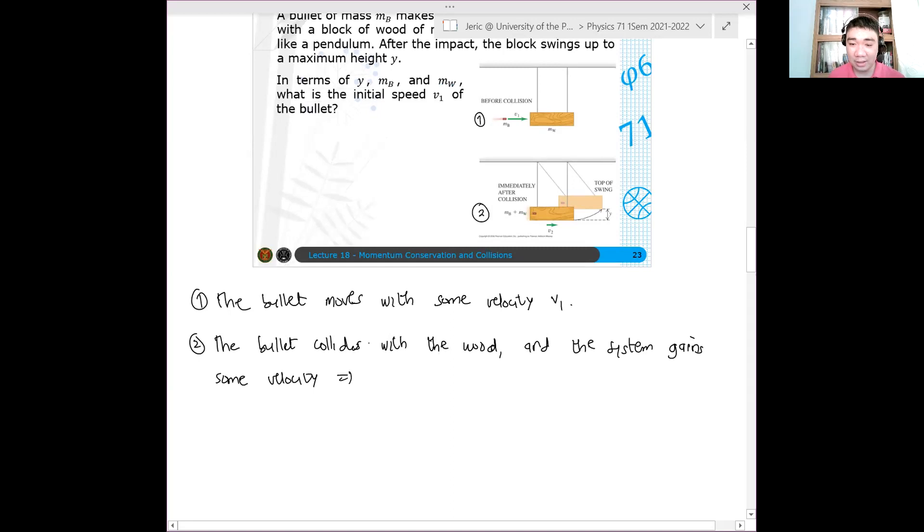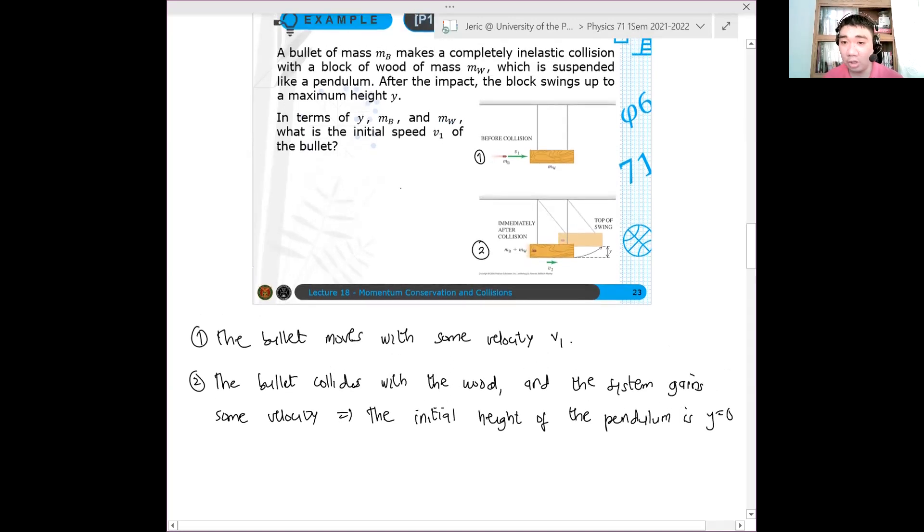We will assume that the initial height of the pendulum is Y equals zero. We will set that as Y equals zero. So this height, it will become my Y equals zero. Yeah, this is my Y equals zero.